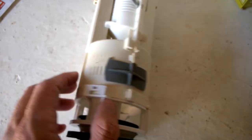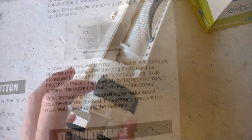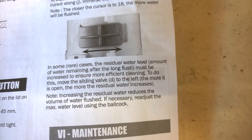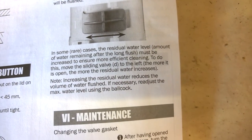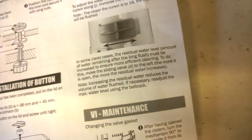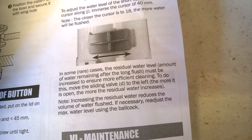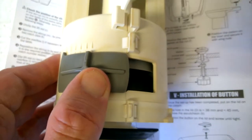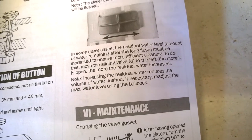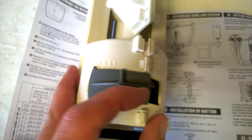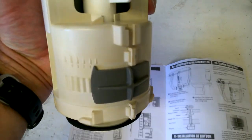This control here, that just slides back and forwards. This one is how much water is retained for the big flush. In some rare cases, the residual water level, amount of water remaining after the long flush, must be increased to ensure the most efficient cleaning. To do this, move the slider valve D to the left. The more it is open, the more the residual water increases. So that's keeping water back. Increasing the residual water reduces the volume of water flushed. So a bit weird terminology there, but it seemed to work perfectly fine in the default level, which was closed.